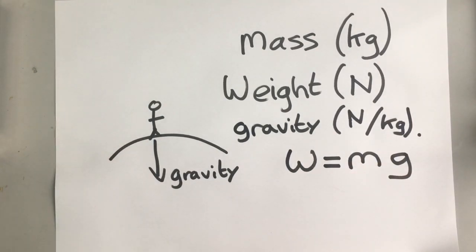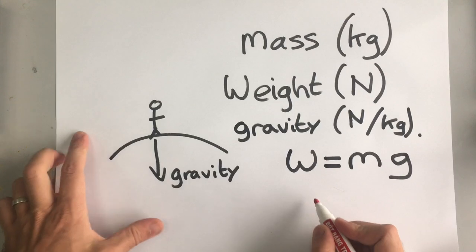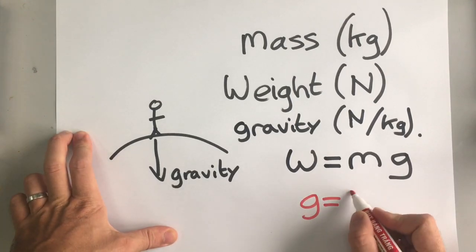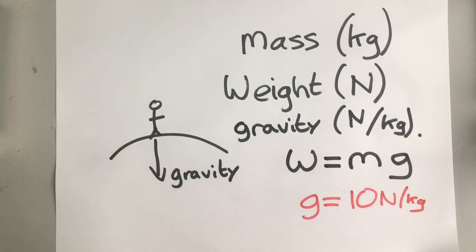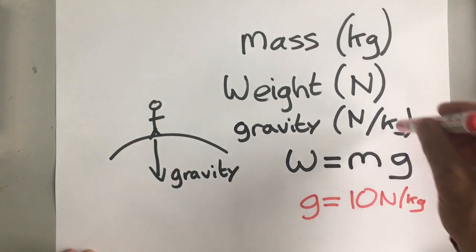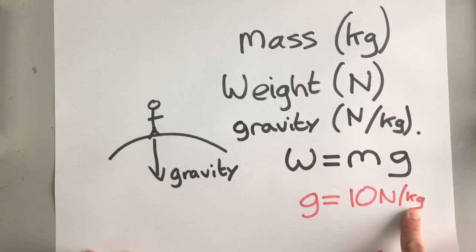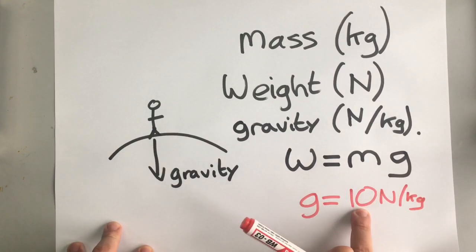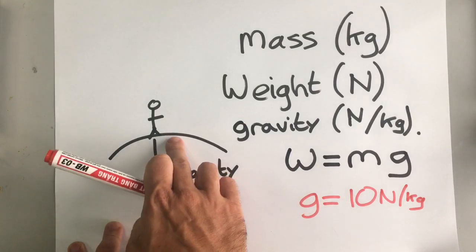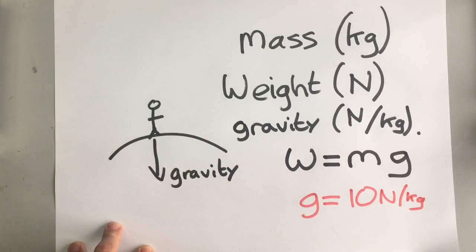On earth, we generally say at GCSE level that gravity is equal to 10 newtons per kilogram. What that means is that if you have 1 kilogram of mass, then there is 10 newtons of force pulling that down towards the center of the earth. If you have 2 kilograms mass, then there are 20 newtons of force pulling it down towards the center of the earth.